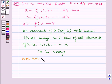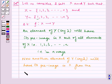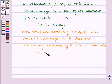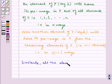Now another element of Y, say 2, will have its pre-image in X from the remaining elements of X, that is n minus 1 elements, that is in n minus 1 ways.